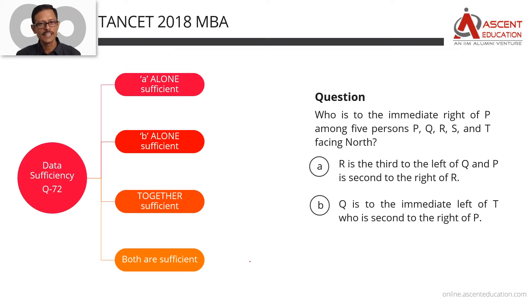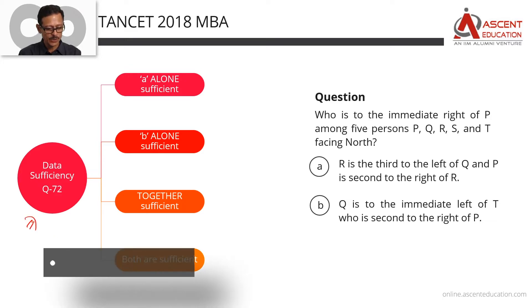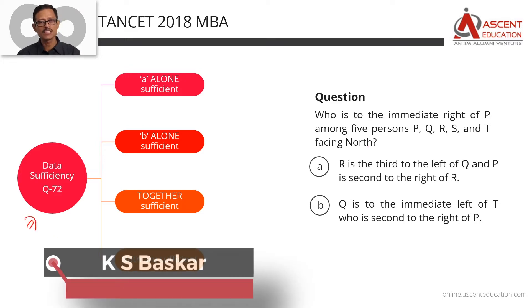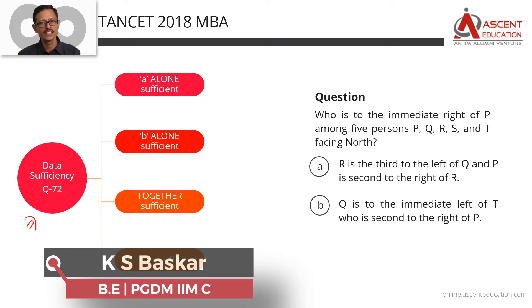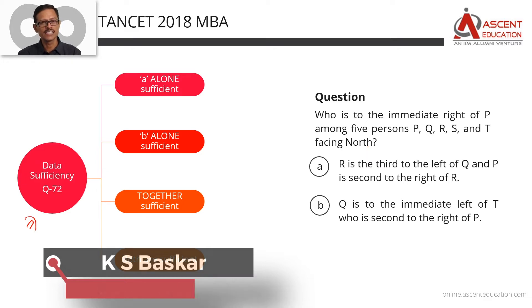Welcome to TANSAT previous year question paper video solutions. This is TANSAT 2018 MBA Data Sufficiency question number 72. It is a seating arrangement question framed as a Data Sufficiency question — a logical reasoning question in the guise of a DS question.